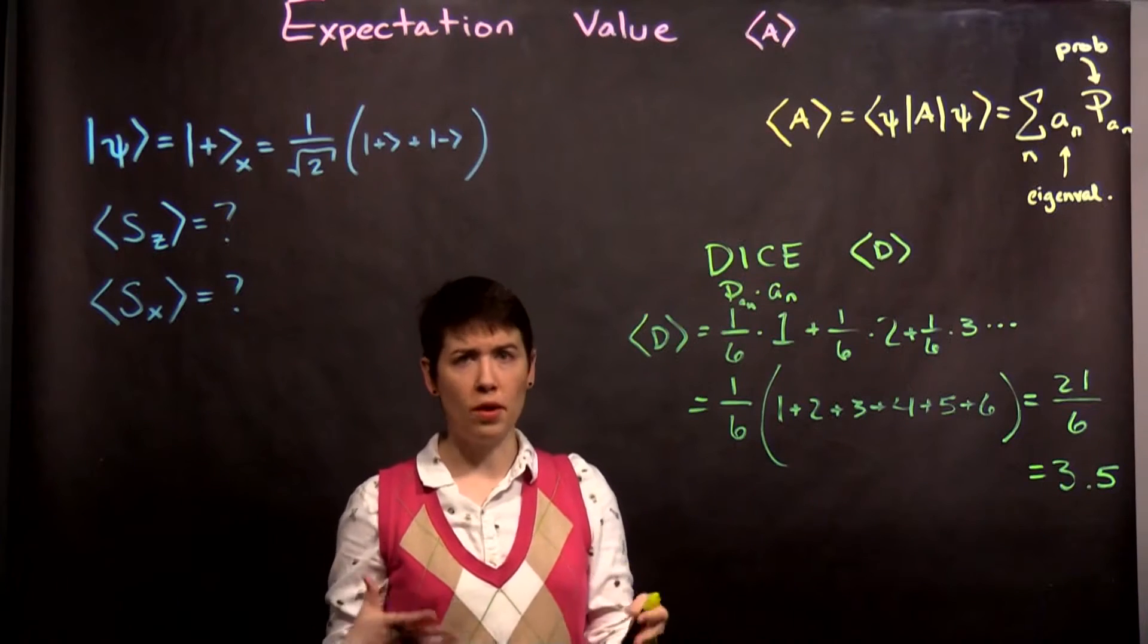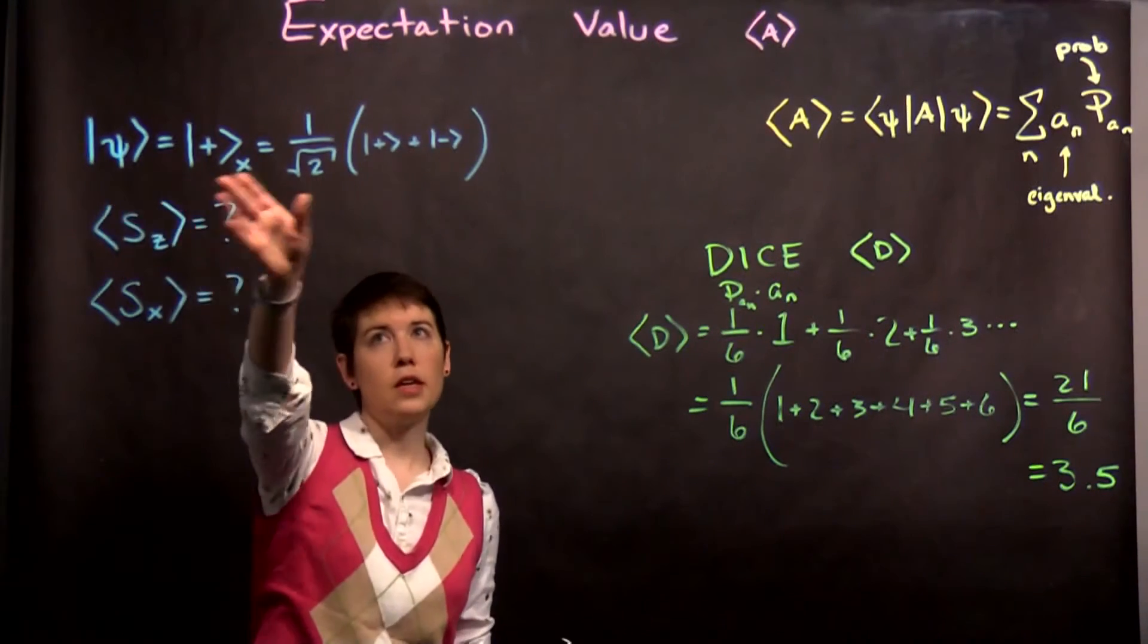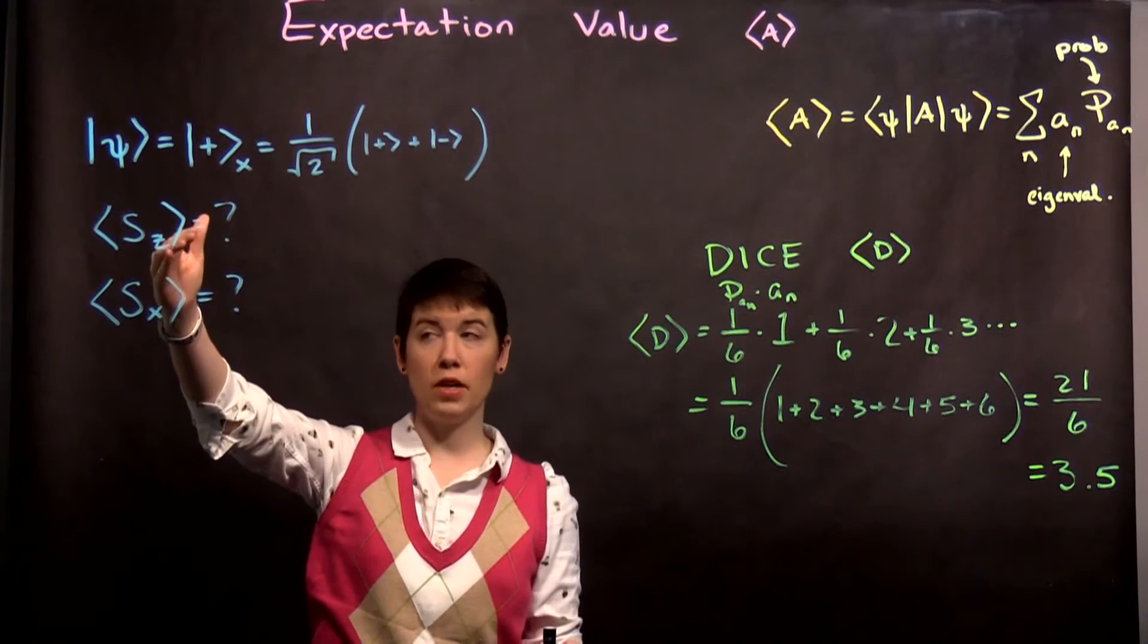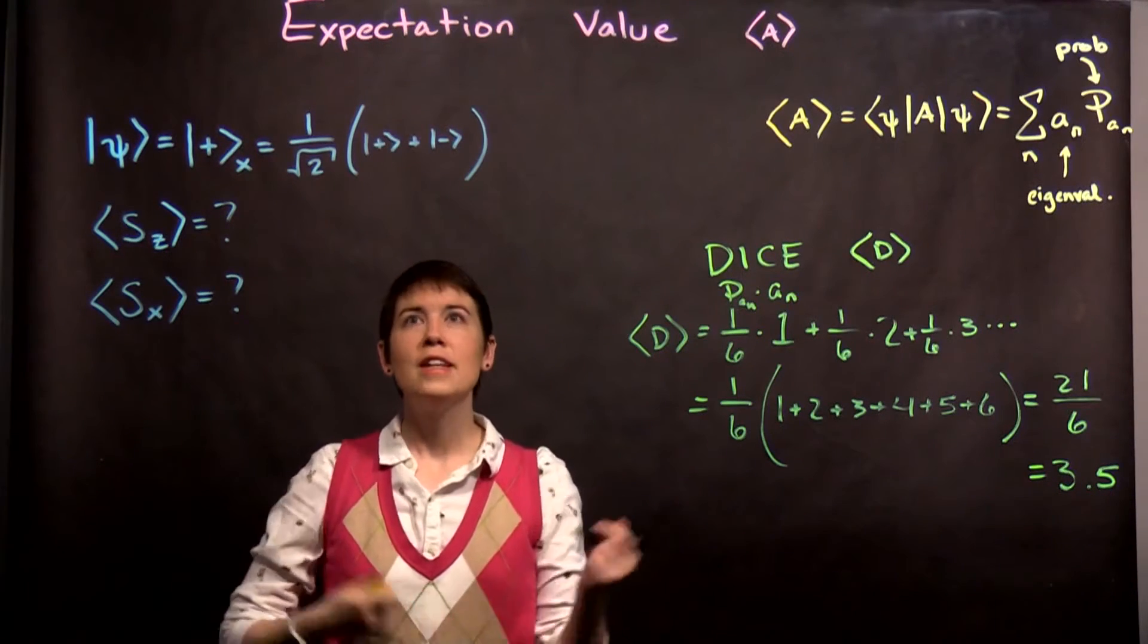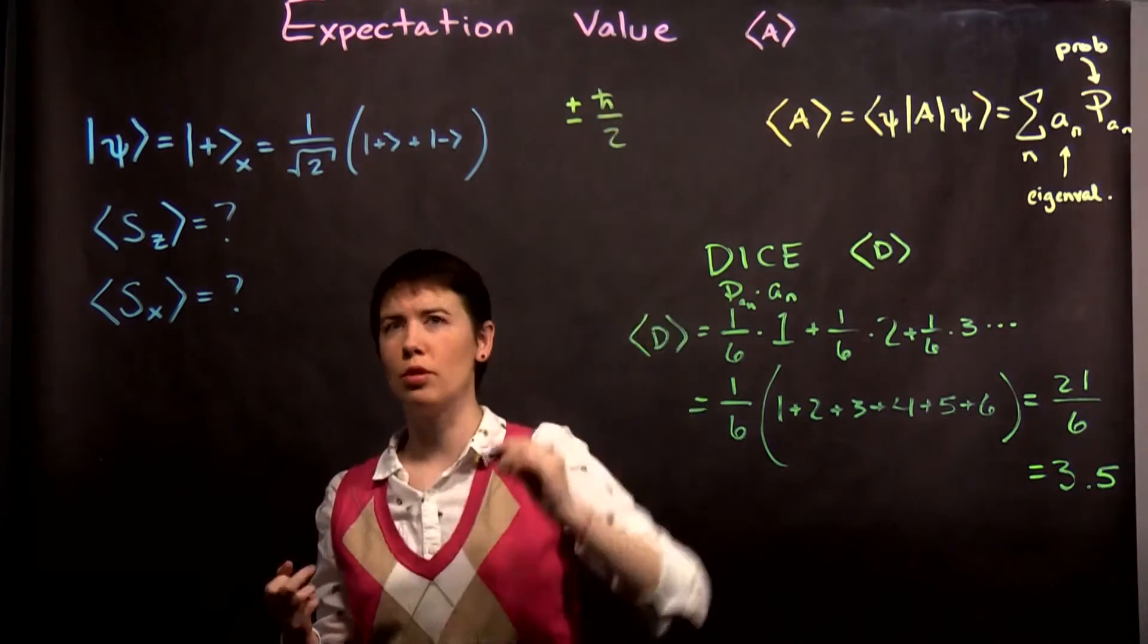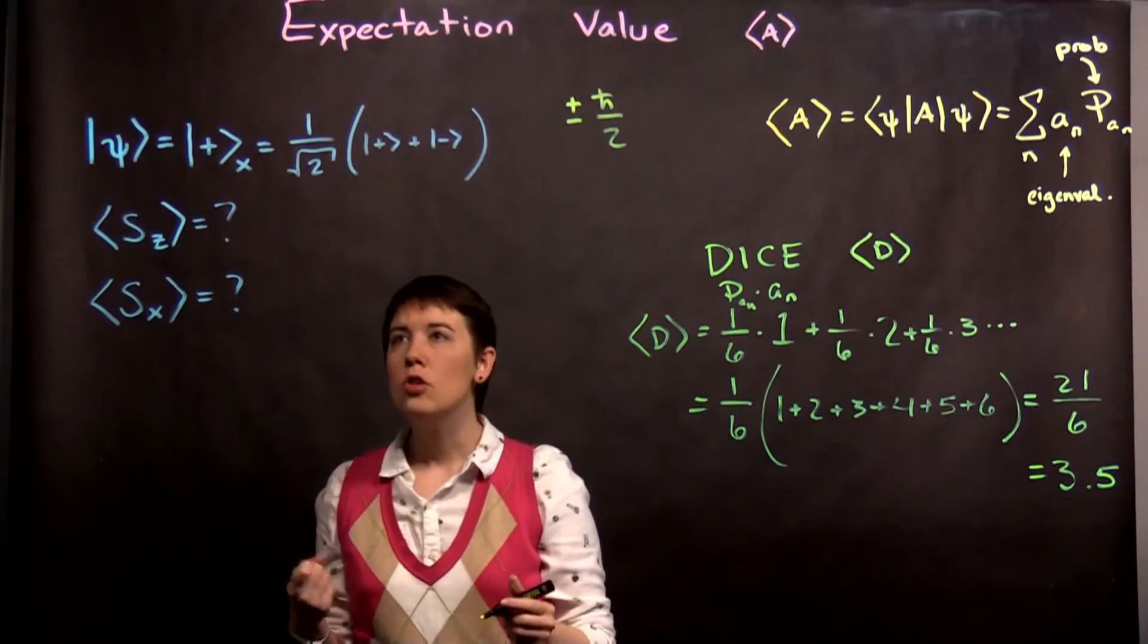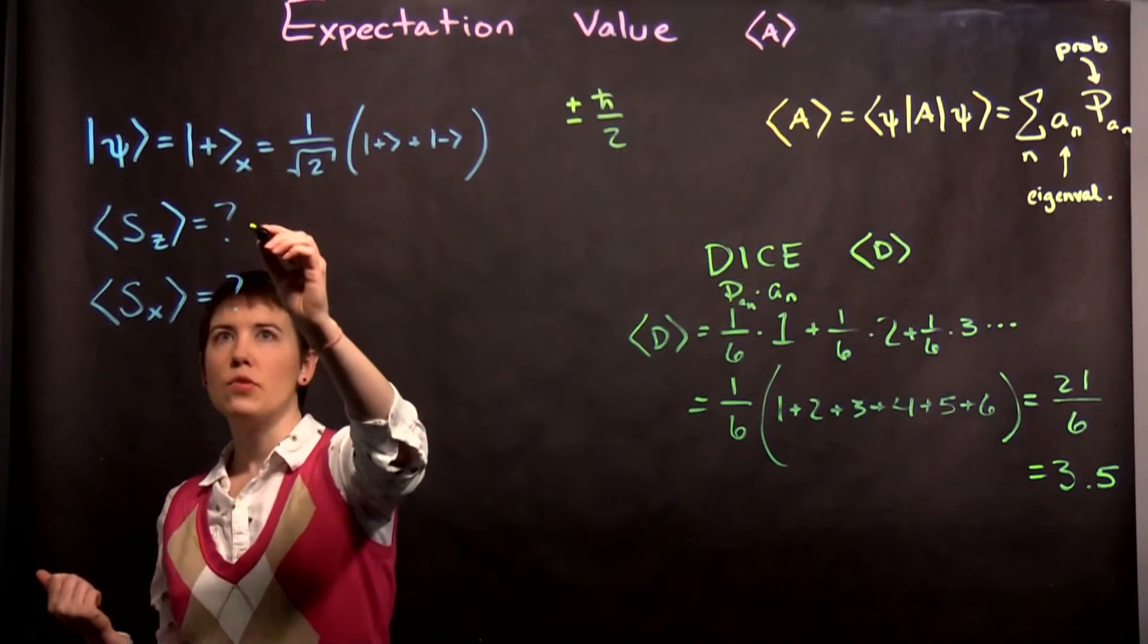Let's go through a quantum example of this. I've picked an initial state, which is spin up in the x direction. We can ask what is the expectation value of spin in the z direction, and then what is the expectation value of spin in the x direction. Remember that your measurement values, your eigenvalues, are going to be plus or minus h-bar over 2, not just 1 or negative 1.